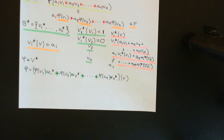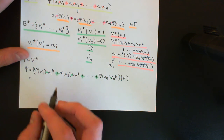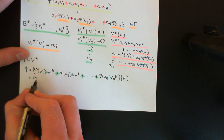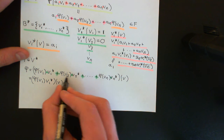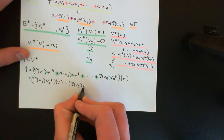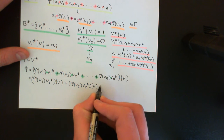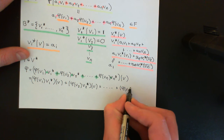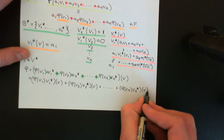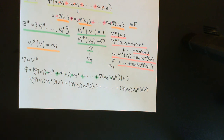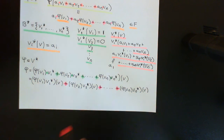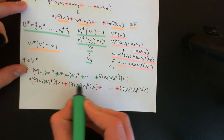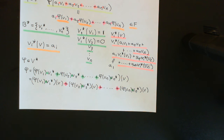By the definition of how addition of co-vectors works, this becomes phi(V1) times V1 star acting on V, plus phi(V2) times V2 star acting on V, all the way up to phi(Vn) times Vn star acting on V. Here I've decomposed the addition in the dual vector space into addition in the field — all the addition signs are now addition in the field.